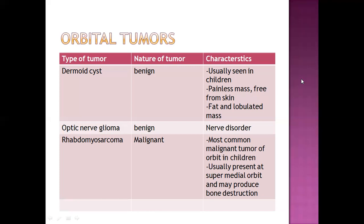Next is rhabdomyosarcoma, which is a malignant orbital tumor. It is the most common malignant tumor of the orbit in children. It is usually present at the superomedial orbit and may produce bone destruction near the eye.